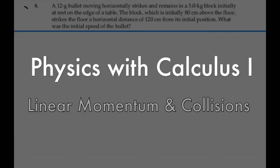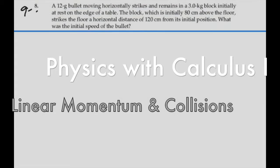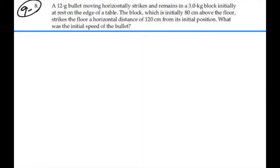Here's problem 9-8. A 12 gram bullet moving horizontally strikes and remains in a 3 kilogram block initially at rest on the edge of a table. The block, which is initially 80 centimeters above the floor, strikes the floor a horizontal distance of 120 centimeters from the initial position. What was the initial speed of the bullet?